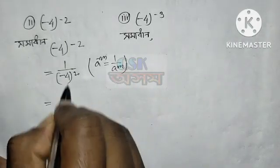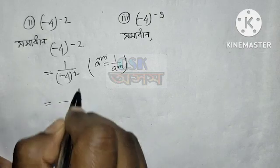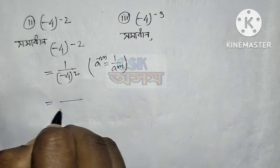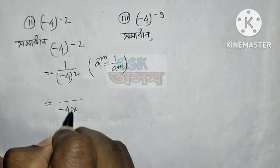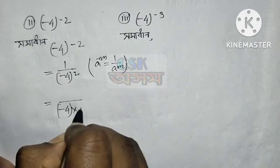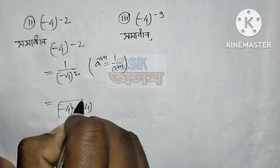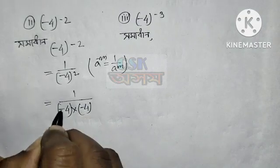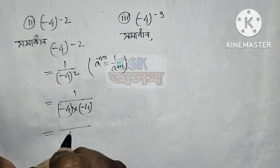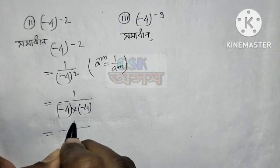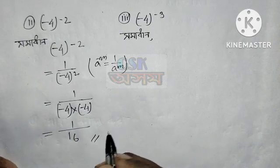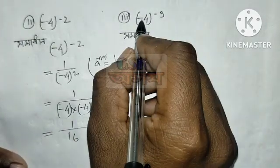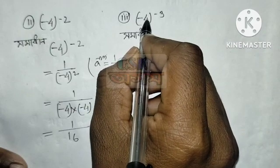Now minus 4 squared means: minus 4 into minus 4. So minus minus gives plus. Yag jati: minus 4 to the power minus 3.